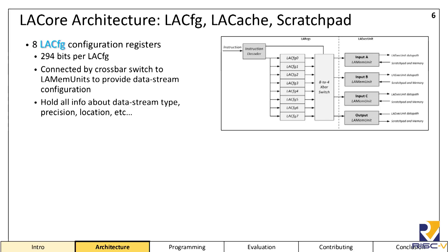The third piece is the LA config register set, which provides configuration for the LA mem units. Each of the eight LA configs is 294 bits and is connected to any subset of the four LA mem units by crossbar switch, so any of the LA mem units can be configured by any of the LA configs at any time. This allows you to reuse vectors or scalars in chained operations.